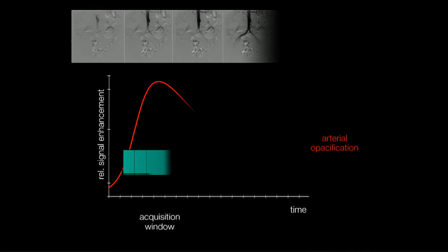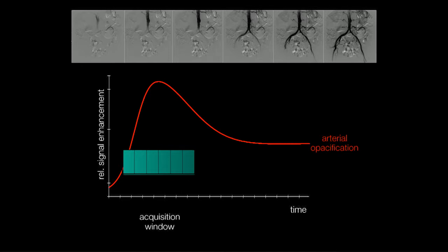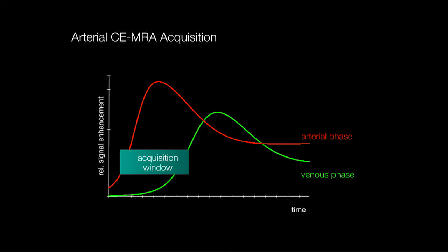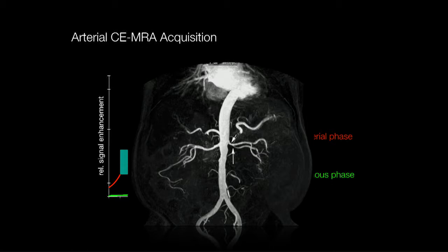With DSA we have very fast temporal resolution, so we can image multiple phases during the passage of an iodine bolus through the vasculature very quickly. Of course we are limited to one projection — we're only seeing a 2D image. With MR, our acquisition window is much longer generally; we can tailor it roughly to the arterial phase but we do get a 3D image at the end of it.